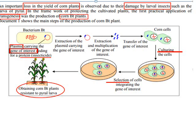Back to the exercise: there is a loss in corn plants because they are being damaged by larval insects, specifically the larva of pyril. To solve this problem, they use a transgenesis procedure where they produce corn Bt plants that are resistant to pyril larva without the need for insecticides. What happened is that they used bacterium Bt, which has a gene that codes for a protein — an insecticide protein that kills insects.